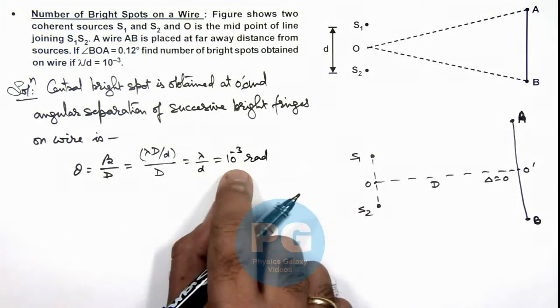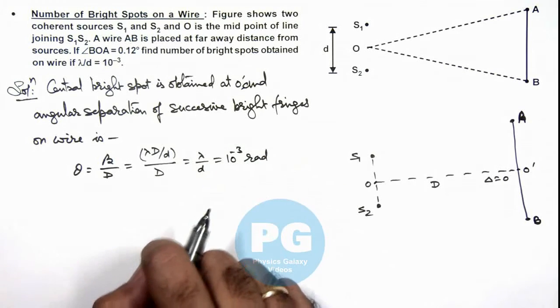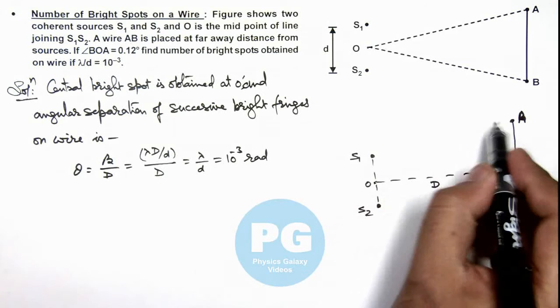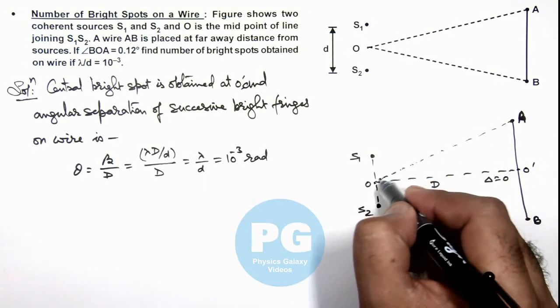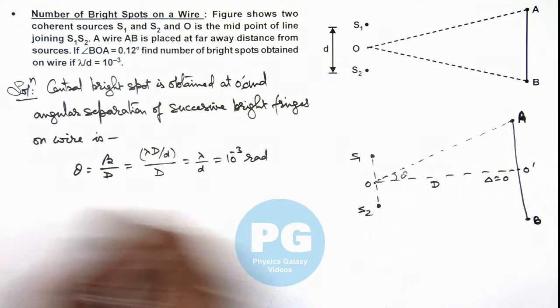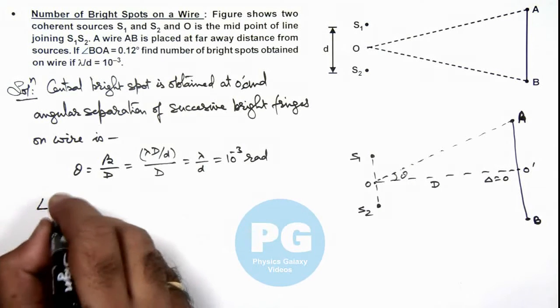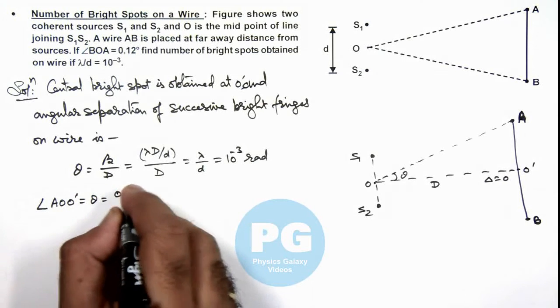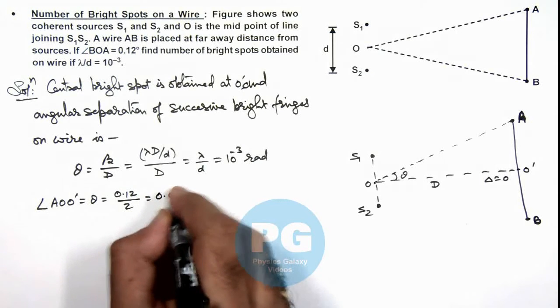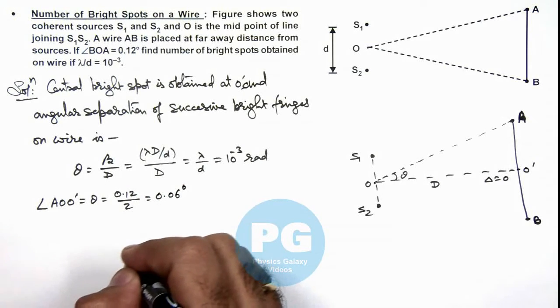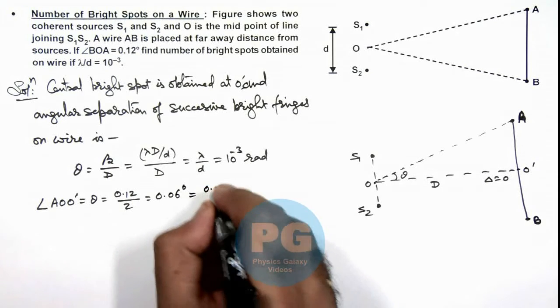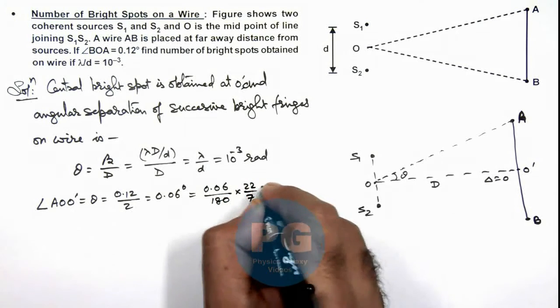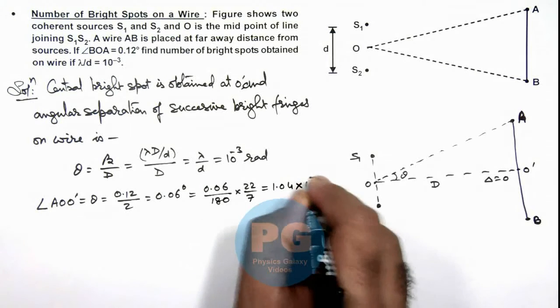In radian, that is angular separation between the bright fringes in respect of the center point O. So if we calculate about this point A, then we can see if this angle is theta, then we can write angle AO O' will be theta, and that is equal to 0.12 divided by 2 which is 0.06 degrees. So in this situation in radian we can write it 0.06 divided by 180 multiplied by 22/7, that is 1.04 × 10⁻³ radian.